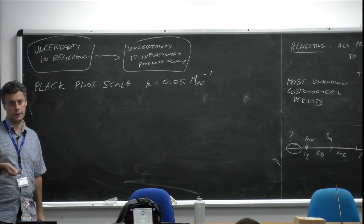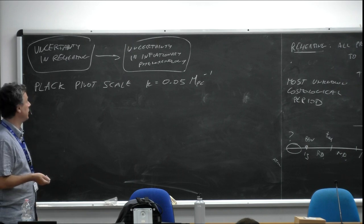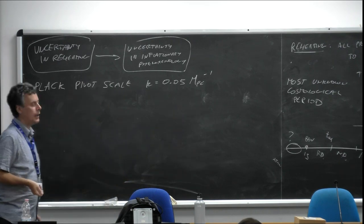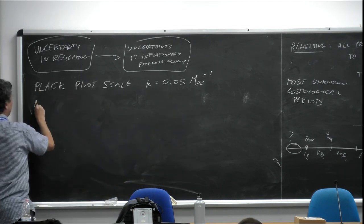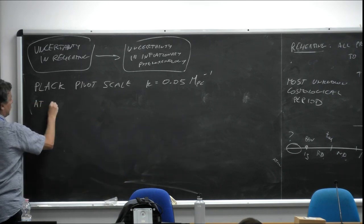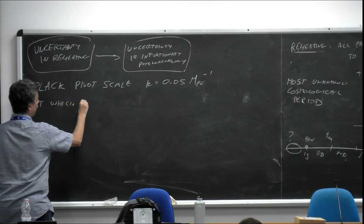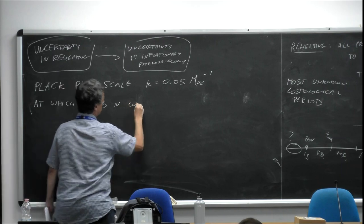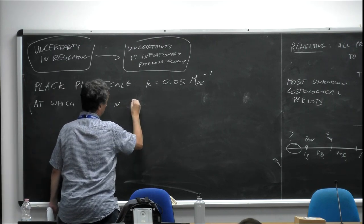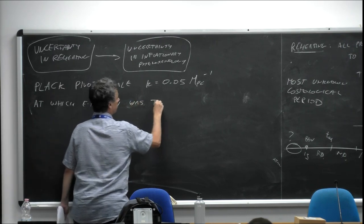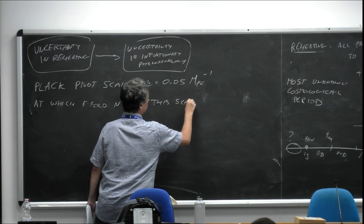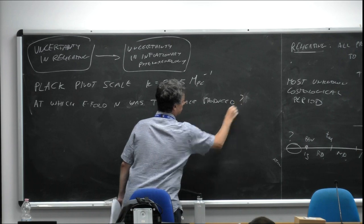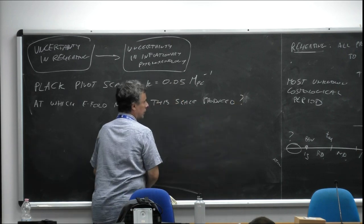Planck gives results — you open the abstract and Planck tells you millions of numbers, for example what is the spectral tilt and what are the limits on the tensor-to-scalar ratio. These numbers depend on the scale, and Planck gives them at the pivot scale. So the question we ask is: at which value of N, at which e-fold, was the pivot scale produced?